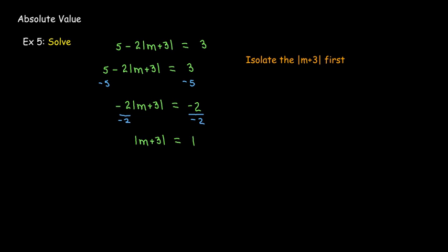Absolute value m plus 3 equals 1. That means m plus 3 equals negative 1, or m plus 3 equals 1. After solving each one of those, I get m equals negative 4 or m equals negative 2.